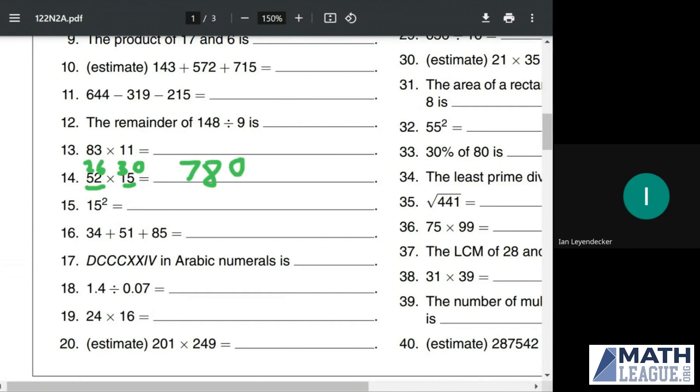15 squared, you should have your squares memorized up to 30. If you don't, you should go ahead and get that committed to memory immediately. 15 squared is going to be 225.